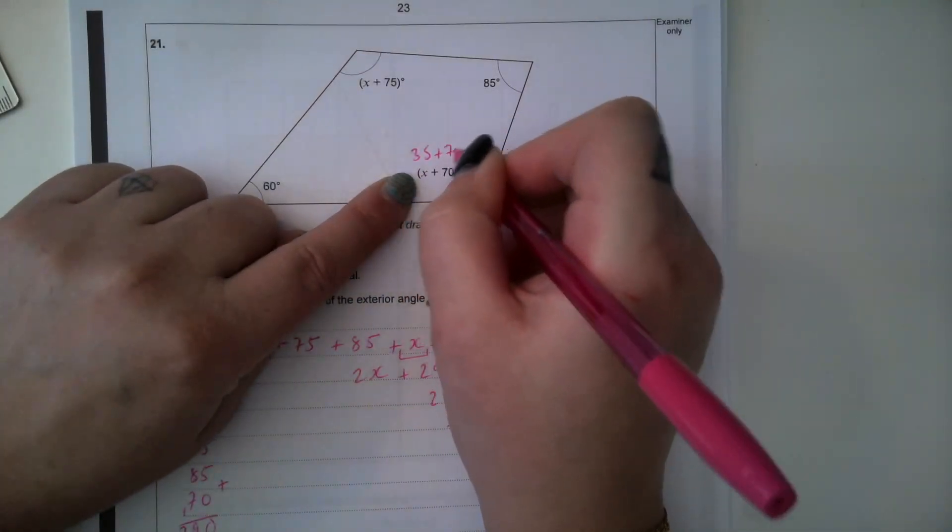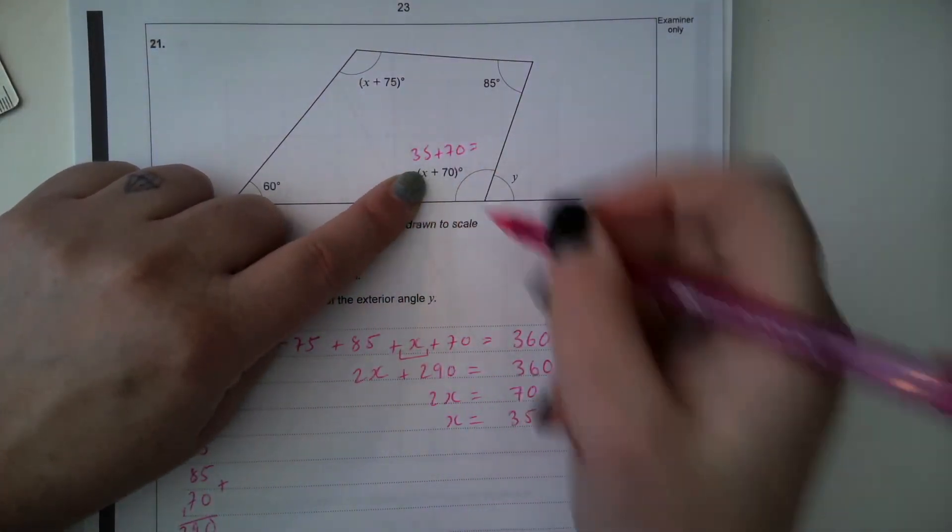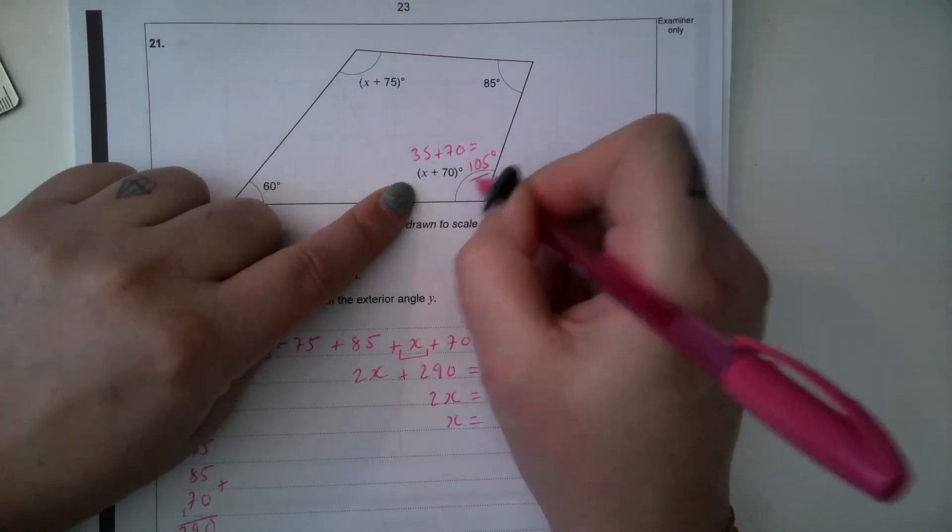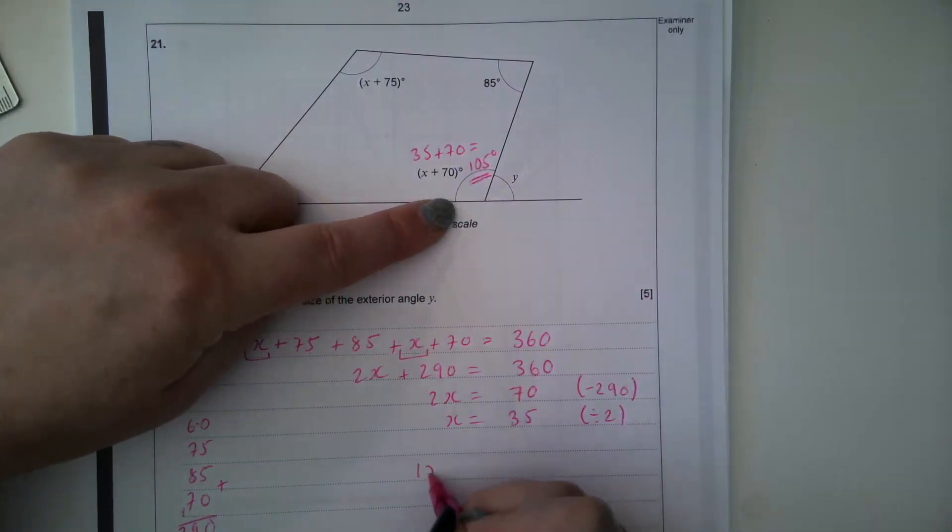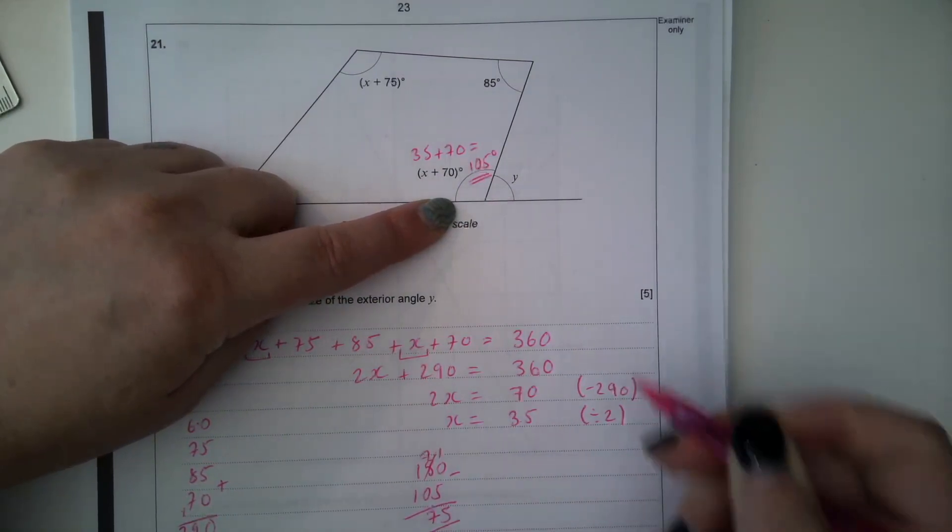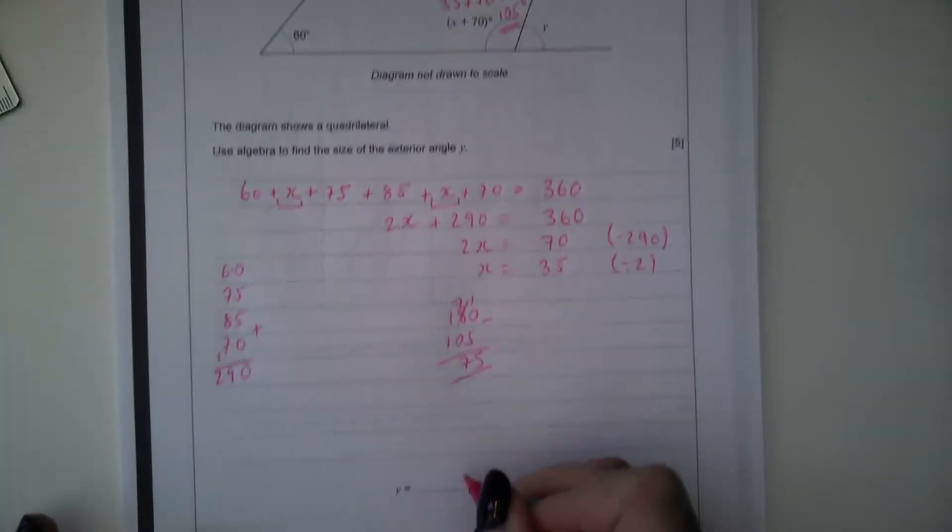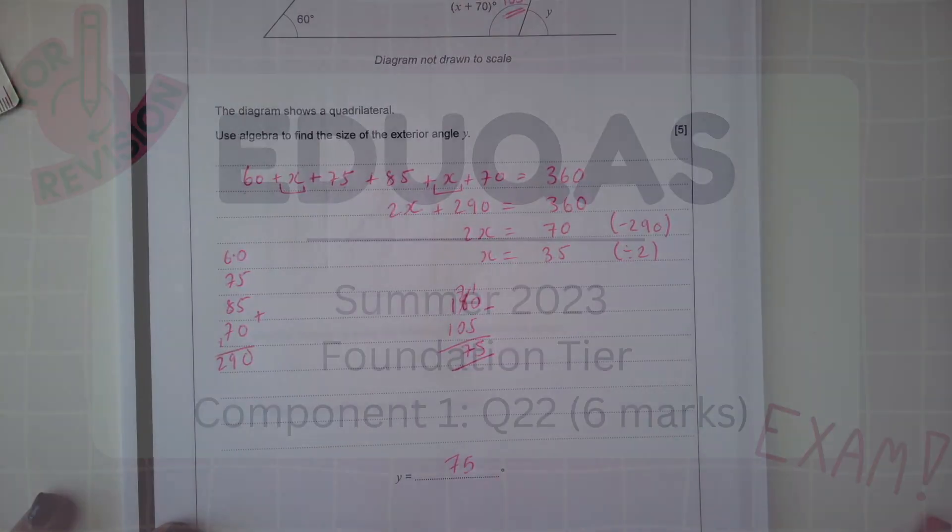So 35 plus 70, substituting that X value in tells us that this angle is 105. These are on a straight line. So 180 subtract 105 is 75 degrees. So Y must be 75 degrees.